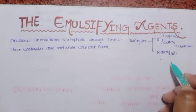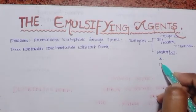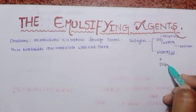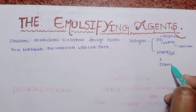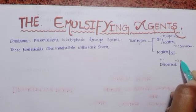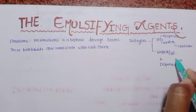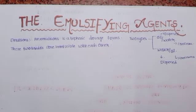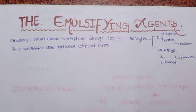Similarly, in water in oil, water is the dispersed phase and oil is the continuous phase. Now, emulsifying agents are the substances or samples which dissolve in both fats and water, and that is known as the emulsifying agent.